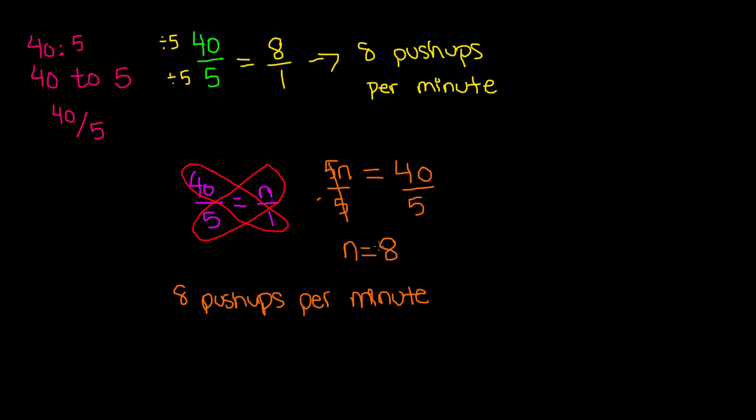And if you go back and put the value of n back into our cross products in our proportion, it will become 40 over 5 is equal to 8 over 1, and that is true, because when you do cross products, we will get, 40 over 5 is equal to 8 over 1. We know that 40 times 1 is 40, and 8 times 5 is 40, and therefore, this is correct. So that means the unit rate is going to be 8 push-ups per minute.